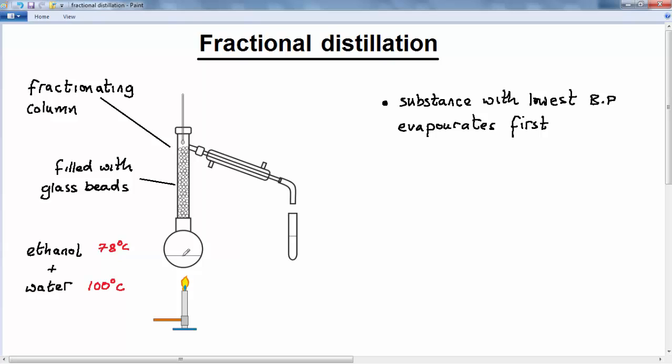Now at the same time, water from the mixture is also evaporating, and so water vapor is also rising up the column. But as the water vapor rises, it transfers its heat to the ethanol, which has just condensed, and so causes the condensed ethanol to re-evaporate.